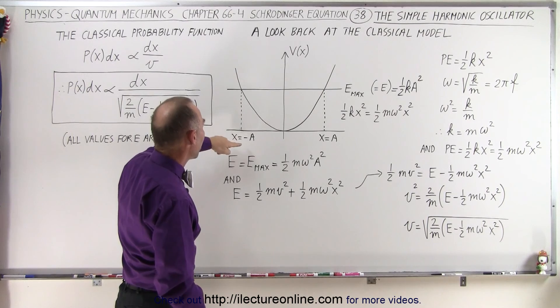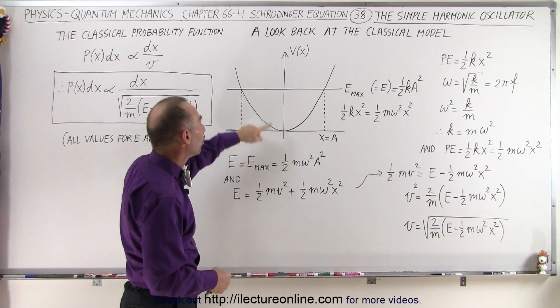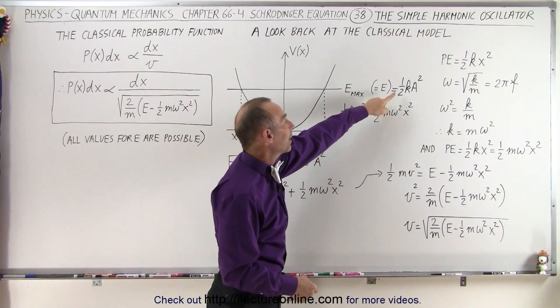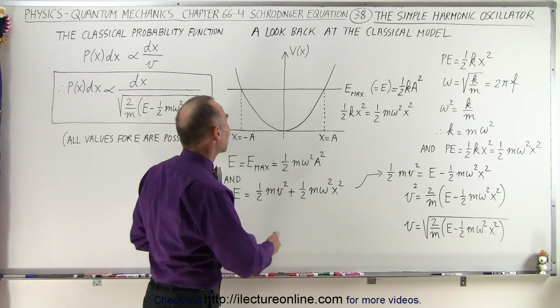So at x equals minus a, at the maximum extension in one direction, the maximum energy is one-half kx squared. But of course, if x is equal to a, then we have one-half ka squared. That's the maximum energy contained within the oscillator.